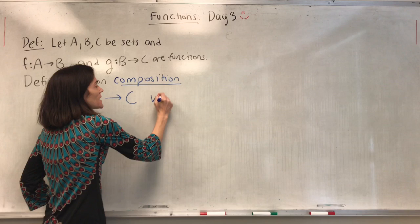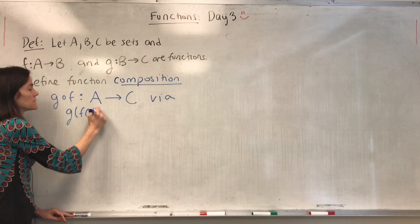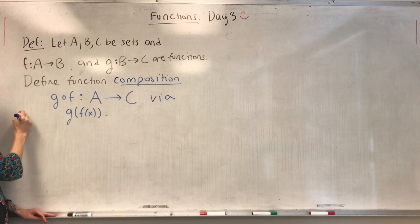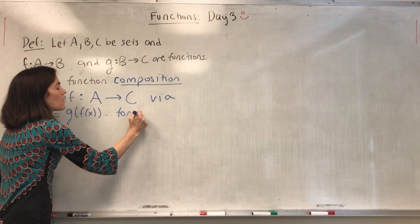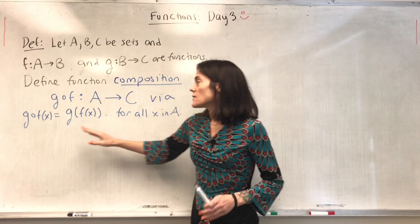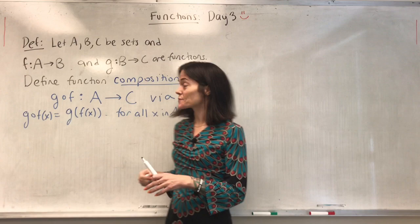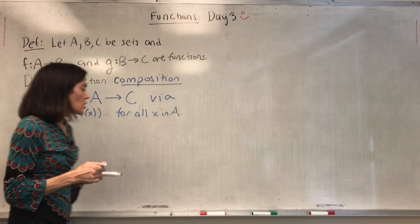This is defined via G of F of X. G compose F at X is G(F(X)) for all X in A. You've probably seen this before in classes — first you move by F, then you move by G.